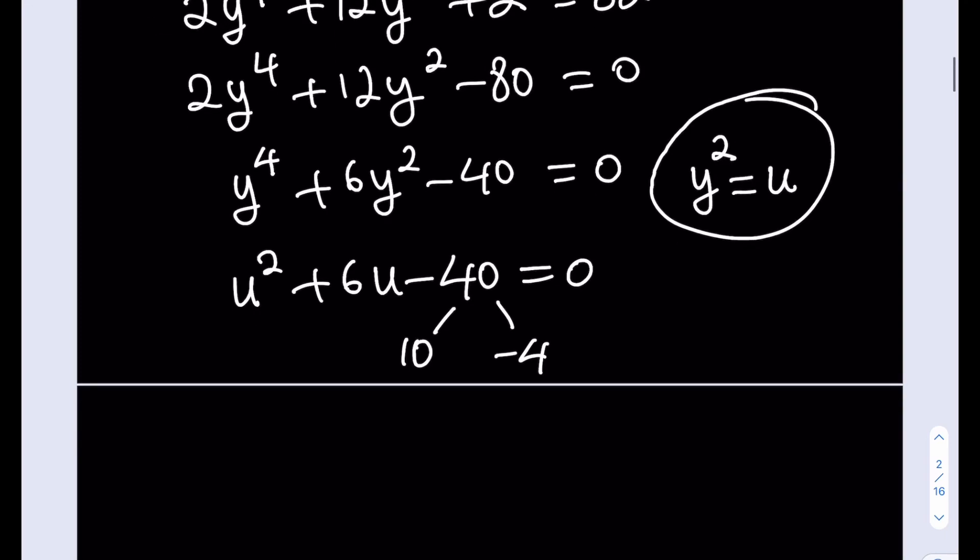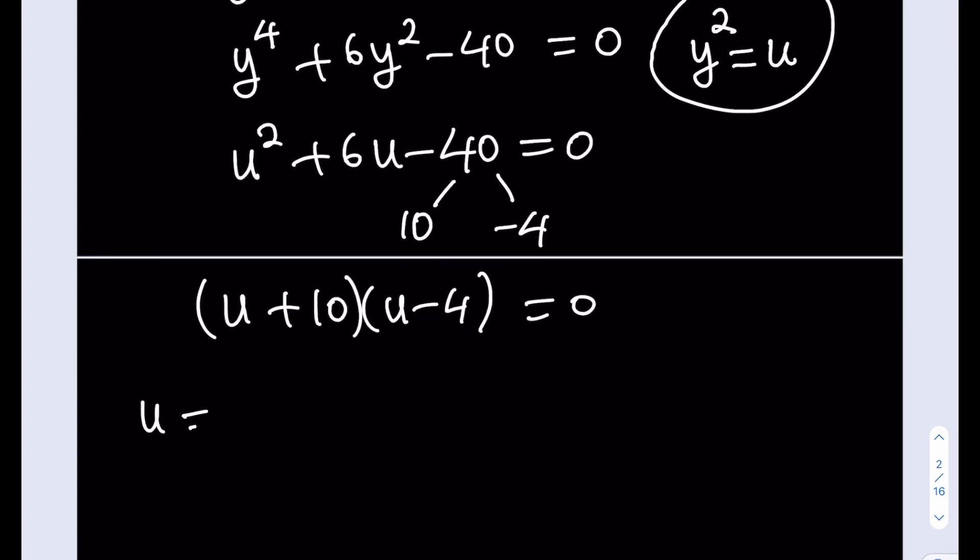Awesome. This means that I have u plus 10 multiplied by u minus 4 being equal to 0. And this means that u is equal to negative 10 or u is equal to 4. Awesome. But what is u? u is y squared. So this means y squared is equal to negative 10. Not a very good result, not very real, right? And y squared equals 4. This is kind of nice because I get y equals 2 and y equals negative 2.